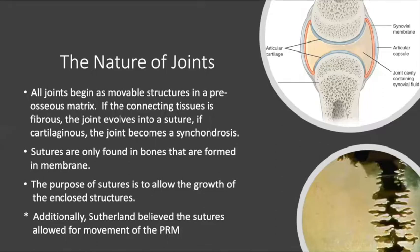All joints begin as movable structures in a pre-osseous matrix. If the connecting tissue is fibrous, the joint evolves into a suture. If it's cartilaginous, it becomes a synchondrosis. We find sutures in bones that are formed in membrane — the cranial bones of the vault — because as the brain grows, the vault requires a little more space. That's the purpose of the sutures: to allow growth of the enclosed structures. Sutherland believed that the sutures allowed for movement for the PRM. But again, Sutherland and Dr. Weaver were not working in tandem; they were working in separate directions on what would become cranial osteopathy.